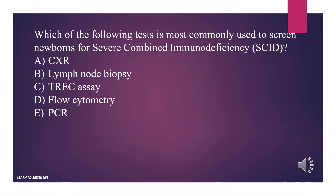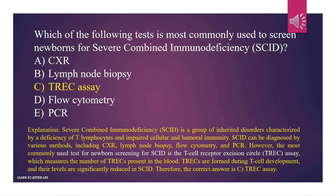Which of the following tests is most commonly used to screen newborns for severe combined immunodeficiency? Options include: chest X-ray, lymph node biopsy, TREC assay, flow cytometry, and PCR. The answer is C, the TREC assay.